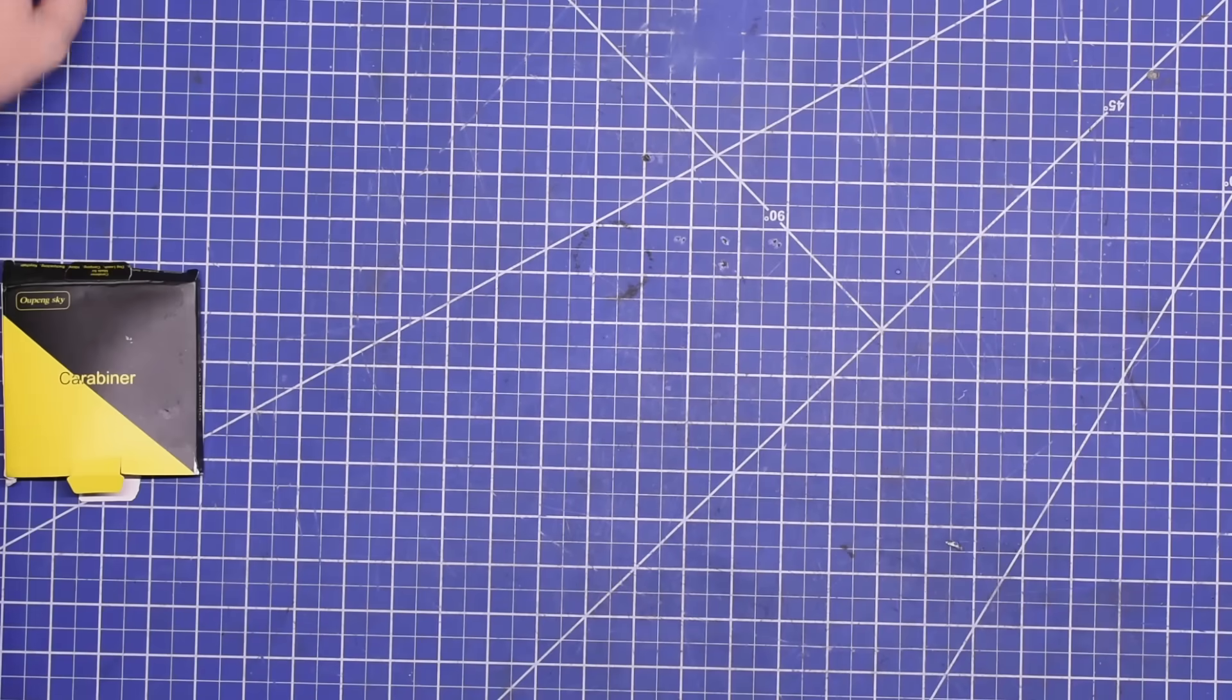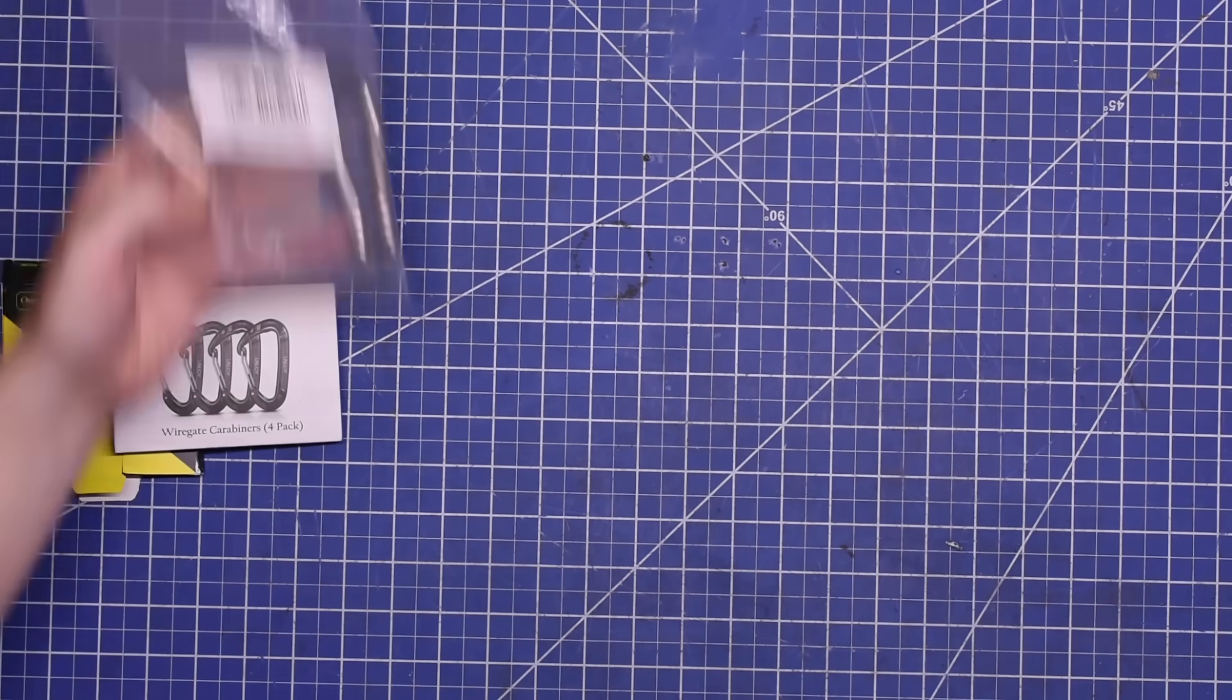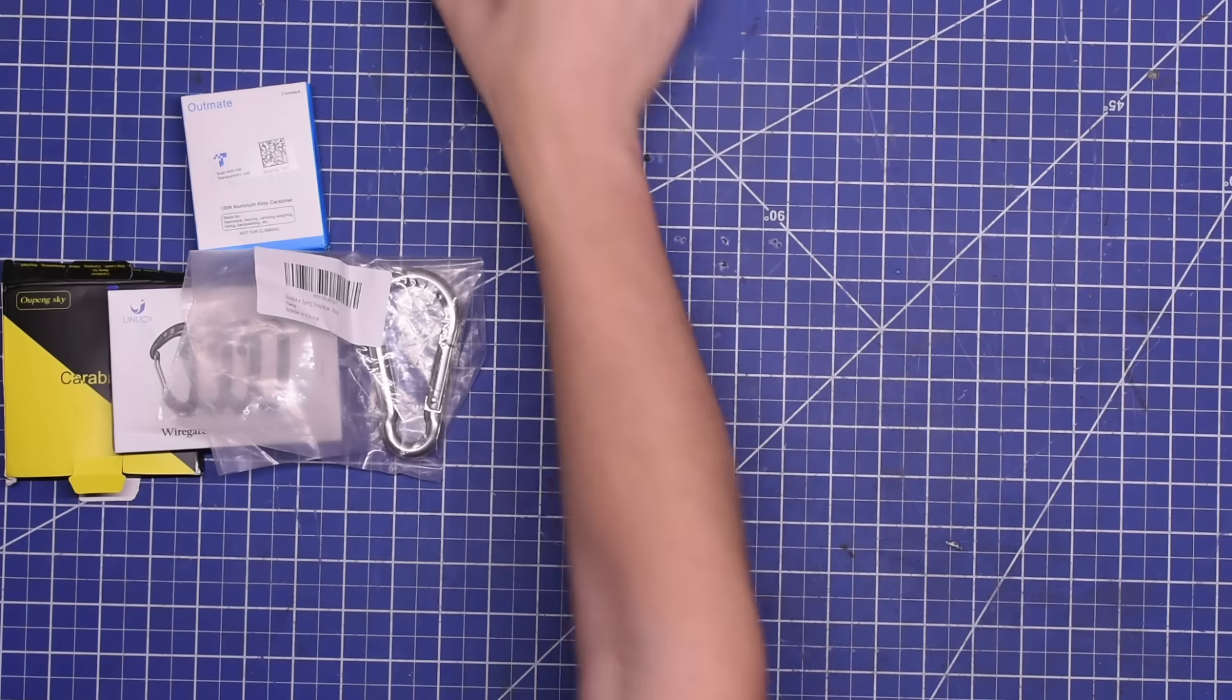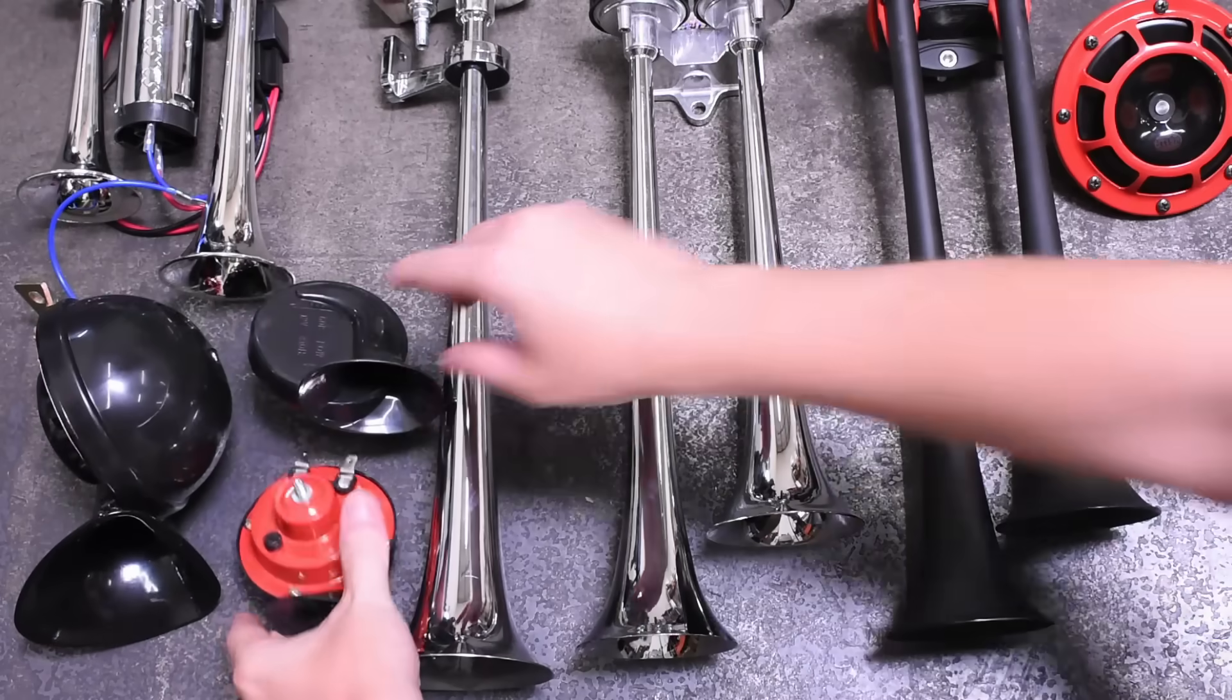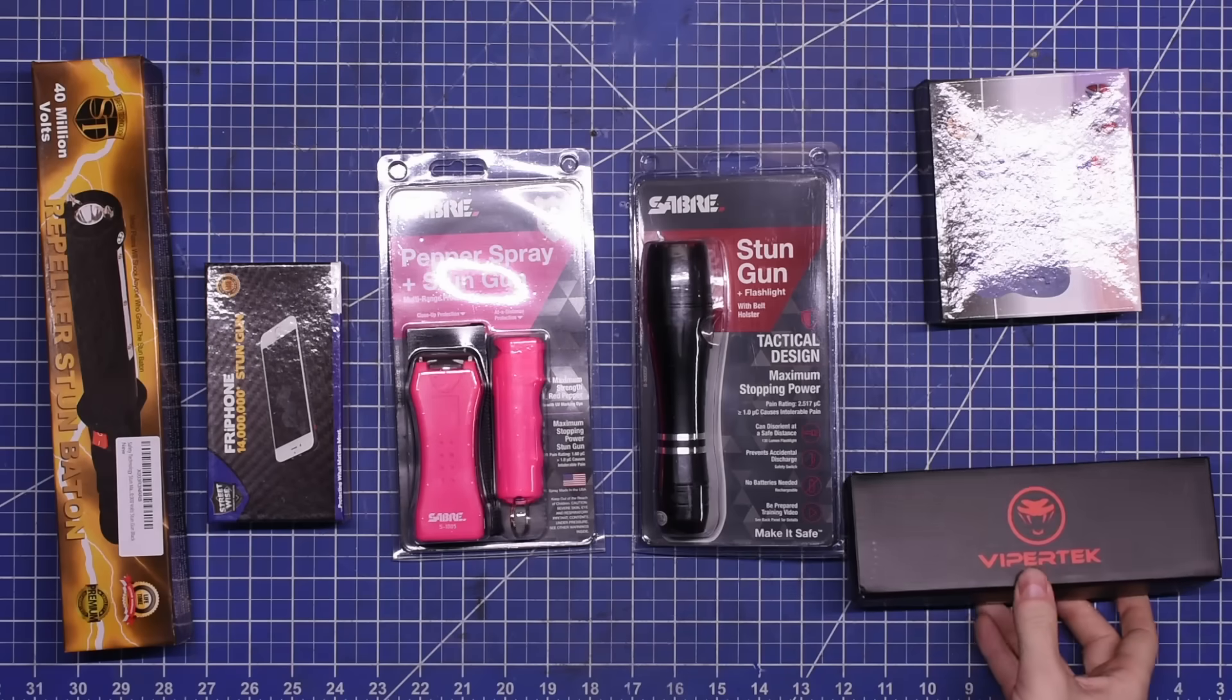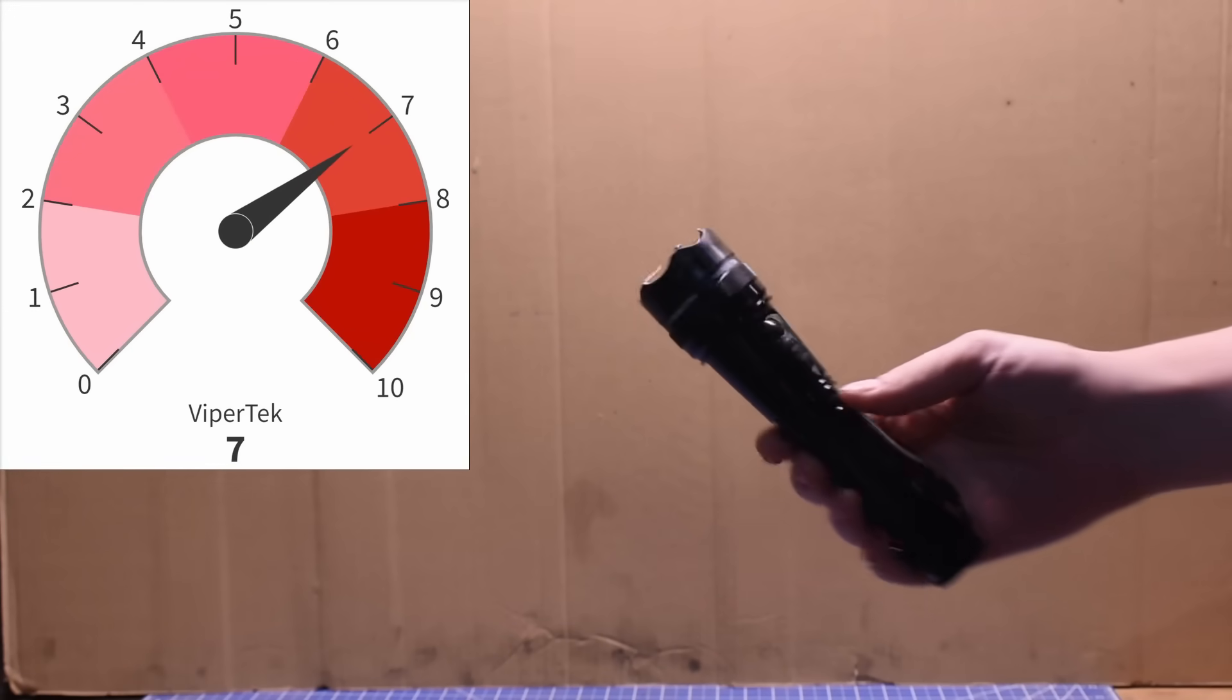Welcome back to TTC, we're continuing our series testing products on Amazon with very specific performance claims that are also often very bogus as it turns out, including flashlights, horns, headlight bulbs, and even lasers and tasers you guys have requested we look at. Appreciate that last one, thanks. But today we're diving into something potentially even more lethal for you.